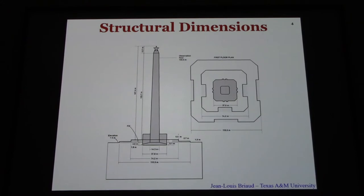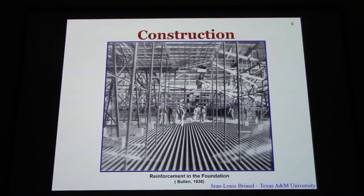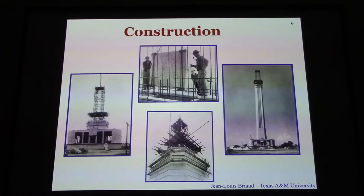The story goes that the Texans asked for help from the federal government, and the federal government said, well no problem, we'll help you build that column, but make sure it's not any higher than the Washington monument. Texas said sure we'll do that, but they forgot to say that they were going to put a big star, a lone star, at the top of the column. So actually when you look in the Guinness Book of World Records, the San Jacinto monument is actually taller than the Washington monument.